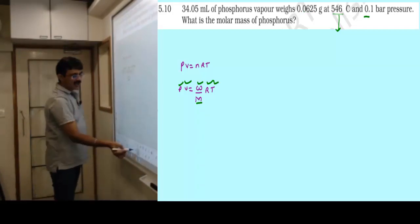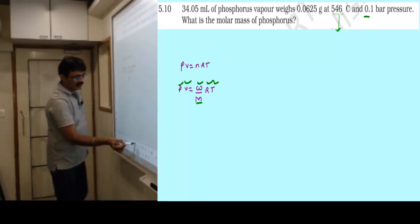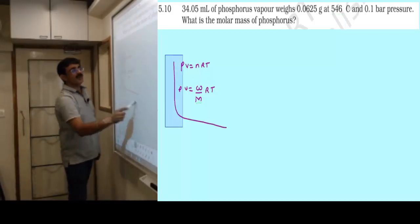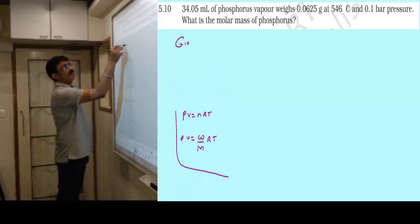You have pressure, volume, but be careful - volume needs to be converted into proper units. Temperature needs to be in Kelvin. Pressure is given, volume is given. Put all values: you have p, v, w, r, t - then m can be found. What you need to do is solve this problem.